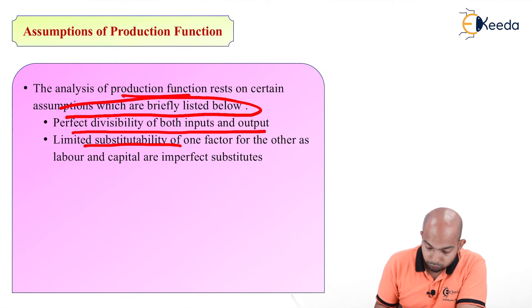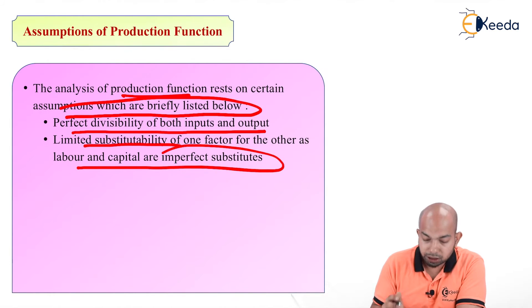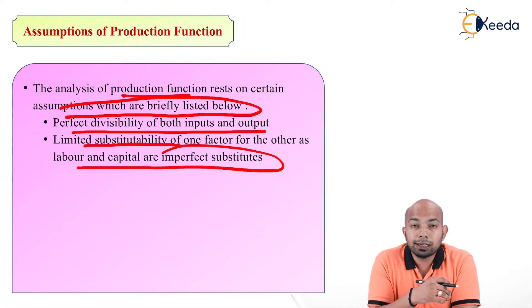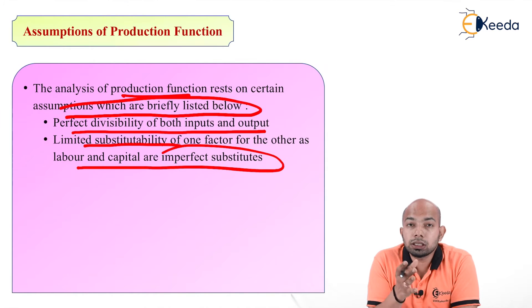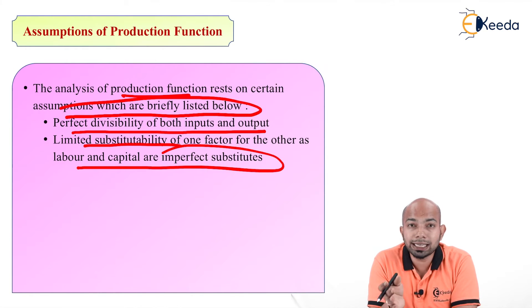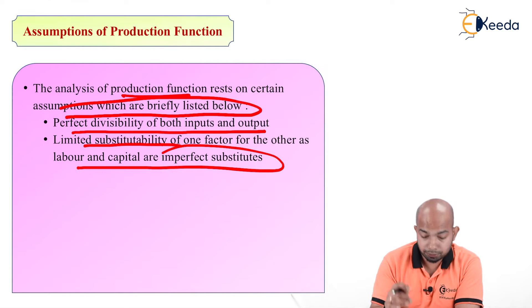Limited substitutability of one of the factors for the others, as labour and capital are imperfect substitutes. We understand or rather we assume that there is limited substitutability of certain factors of production, as labour and capital are imperfect substitutes. You cannot replace labour and capital. That is what we assume here.